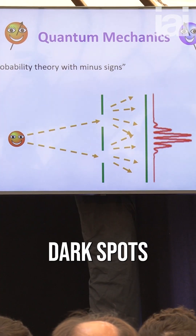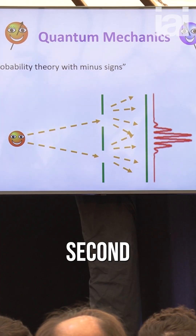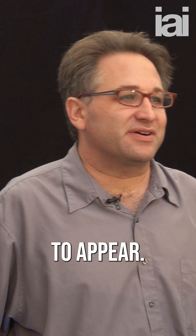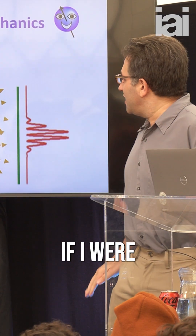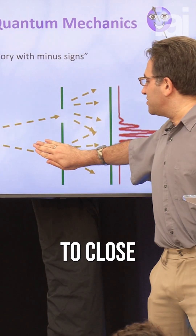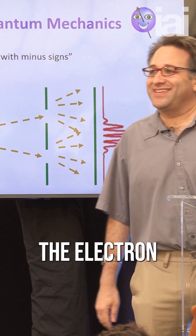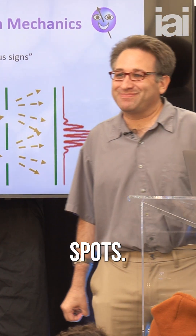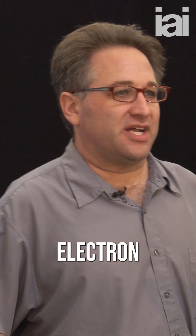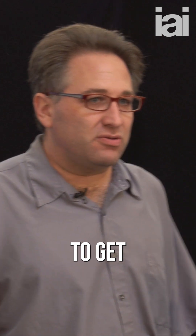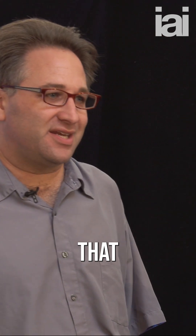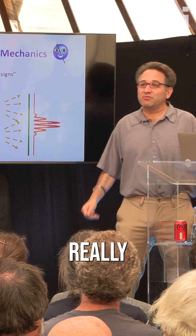There are certain dark spots on the second screen where the electron never wants to appear. And yet, if I were to close off one of the slits, then the electron can appear in those spots. By decreasing the number of paths that the electron can take to get somewhere, I can increase the probability that it gets there.